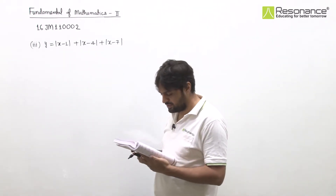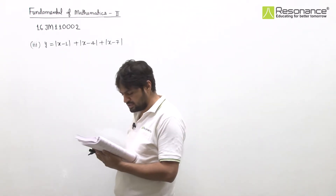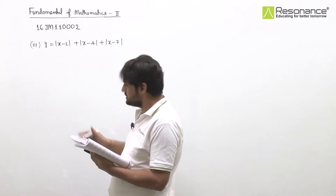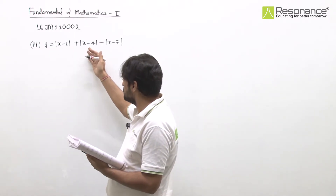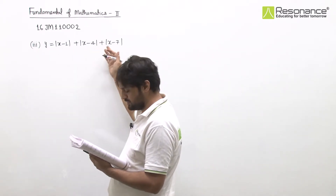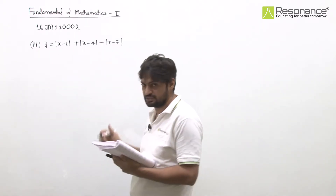In the third part, we have three modulus terms: y equal to mod of x minus 1, plus mod of x minus 4, plus mod of x minus 7.